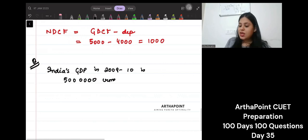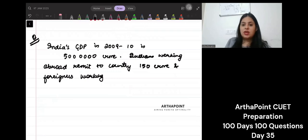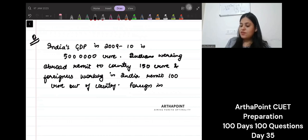Indians working abroad remit to country 150 crore. And foreigners working in India remit 100 crore out of country. And foreign investors, it's not difficult. You just have to read this language. Repatriate 50 crore.